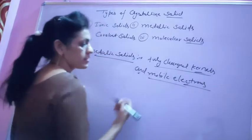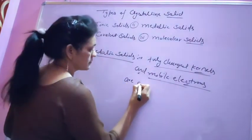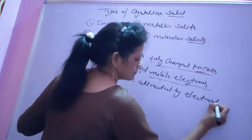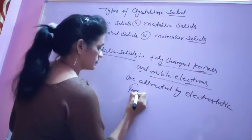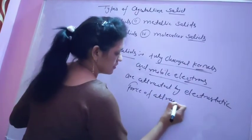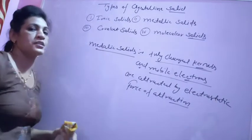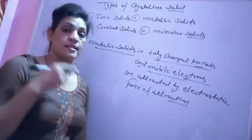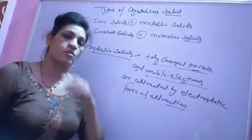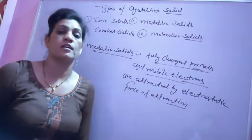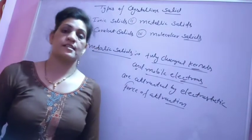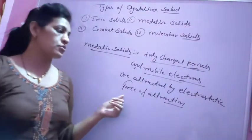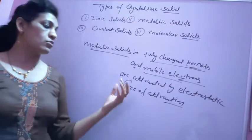The positively charged kernels and mobile electrons are attracted by electrostatic force of attraction. Metals conduct electricity due to the presence of free electrons — they are electronic conductors. They also generally have high melting points.